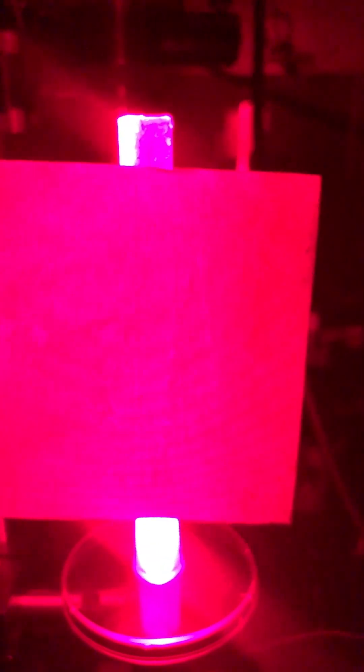There are diffraction stripes visible, diffraction rings from the particle which can be used to estimate particle size. Larger distance, stripes move more apart.